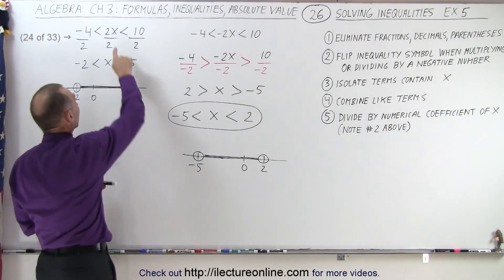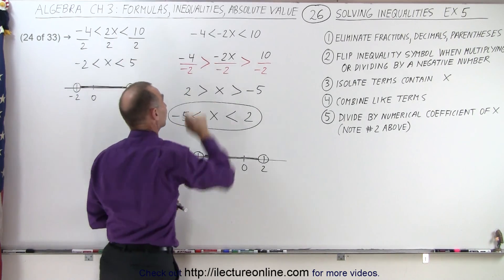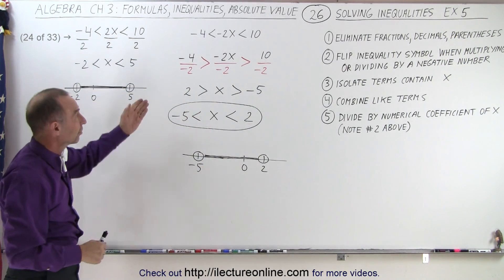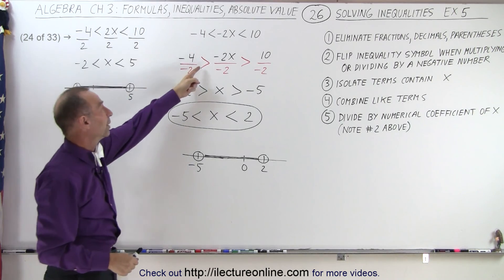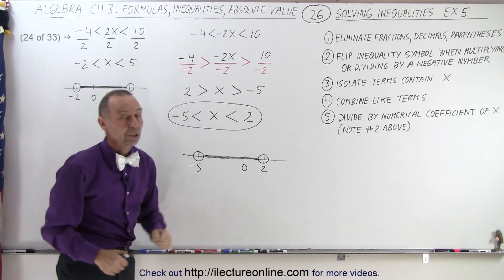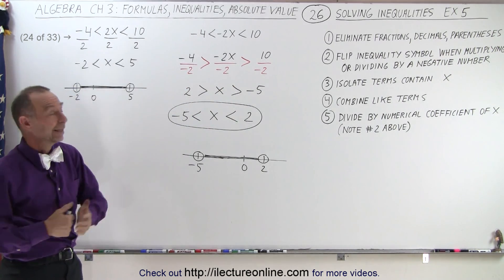The only difference is we have a positive 2x over here and a negative 2x over there. But here you can see that when you multiply or divide by a negative number, you will have to flip both of the inequality symbols. And that is how it's done.